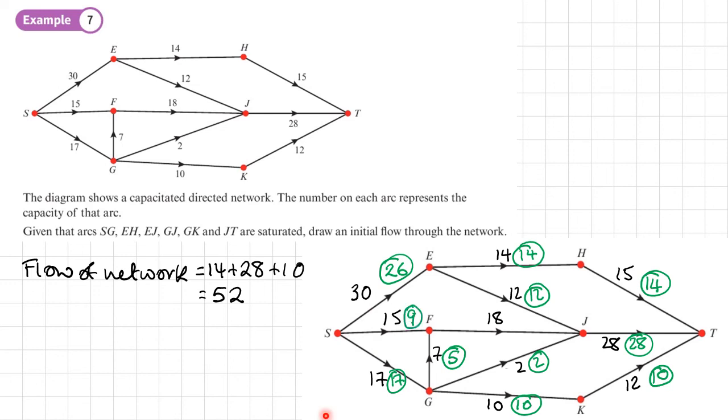That tells me that going into vertex F, I have 15 and 9, which is 14. So the flow going out must also be 14. And we'll just check that all works with vertex J, 12 plus 14 plus 2, 28, yes. So that all balances. So those numbers now in green in circles represent my initial flow through this network.